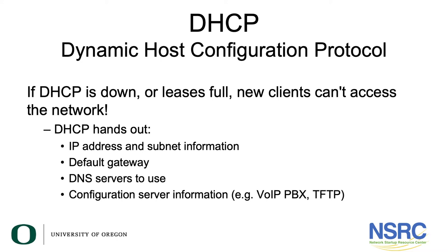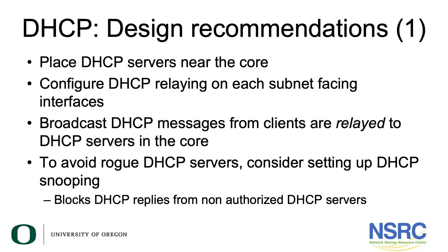So again they think the internet is down and they phone you and complain about it. DHCP hands out the IP address and subnet information, it also hands out the default gateway and which DNS servers to use. There are also many DHCP options which allow server configuration information to be passed, for example the VoIP PBX or the TFTP server.